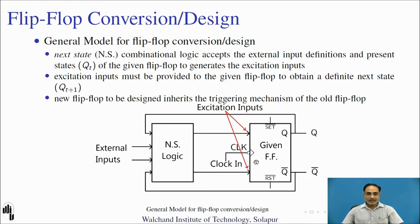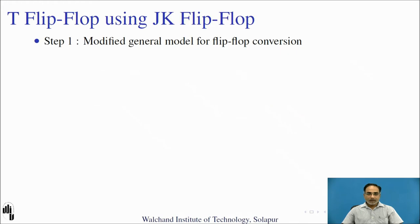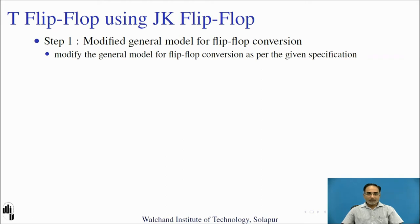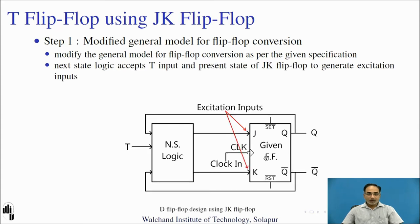The new flip-flop being designed inherits the triggering mechanism of the given flip-flop. So if you are using a negative edge-triggered JK flip-flop, you are going to design a negative edge-triggered T flip-flop; if you use a positive edge-triggered JK flip-flop, you design a positive edge-triggered T flip-flop. We will first modify our general model as per the specifications: the next state logic accepts T input and the present state of the JK flip-flop to generate its excitation inputs. Here we are considering a negative edge-triggered JK flip-flop.